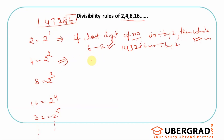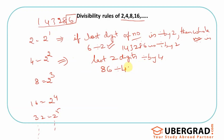Similarly, 4 is 2 squared. The rule is: check the last 2 digits. If they are divisible by 4, then the whole number is. The last 2 digits in our example are 86. Is 86 divisible by 4? No — the closest multiple is 84, so the remainder is 2. That means the whole number is not divisible by 4.